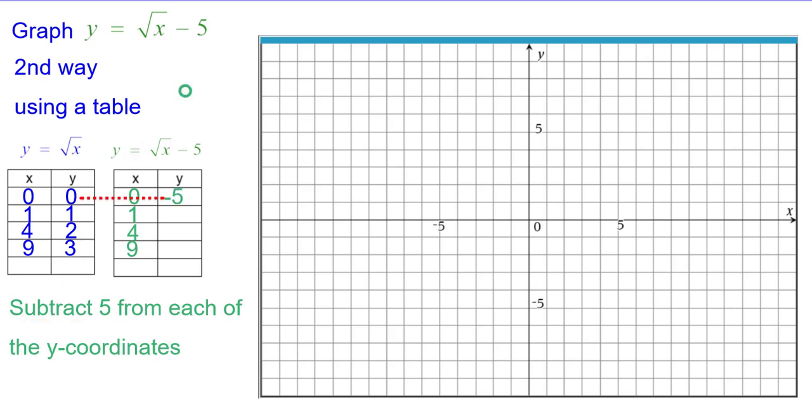So 0 would go to negative 5 and then we'll plot it. 1 goes to negative 4 and plot that one. 2 minus 5 would be negative 3 and then 3 minus 5 would be negative 2. And plot those four points.